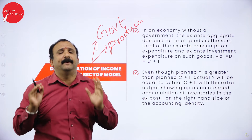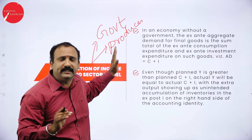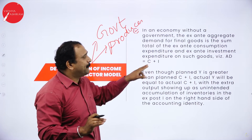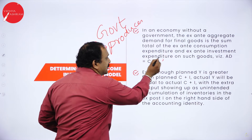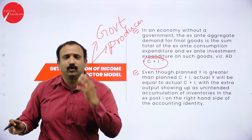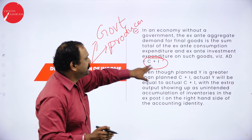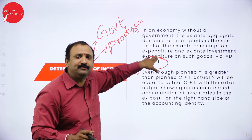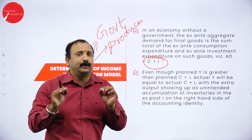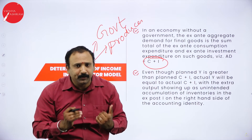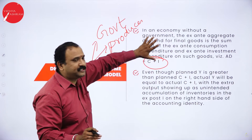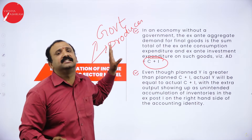With no government, you simply get C plus I — consumption plus investment. There is a consumer who consumes whatever you produce, and there will be investment because that expenditure goes back into inventory. So that is your two-sector model: you produce for the consumer, the consumer consumes your goods, and the investment is expenditure in the form of inventory.